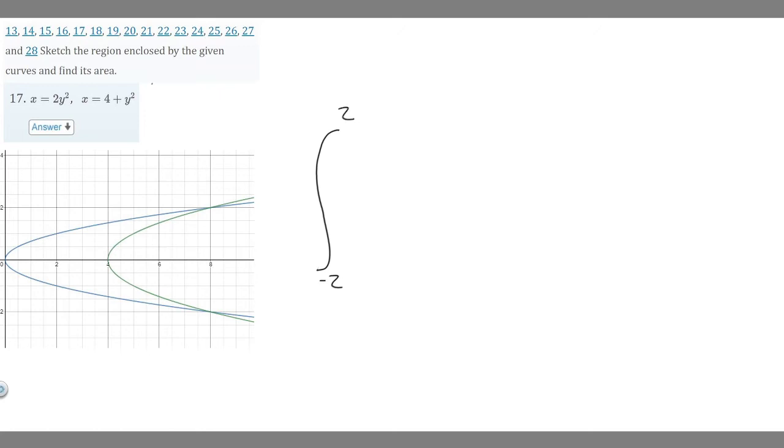Next, look at your two functions—it's easier to see graphically. Since we're working with y instead of x, the function furthest to the right is the one you write first. In this case, that's the green one: 4 + y².